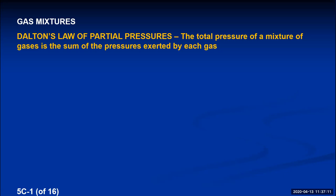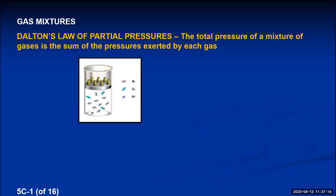Air is an example of a gas mixture. Air is composed of mostly nitrogen, but it has a significant amount of oxygen and some argon as well. Typically atmospheric pressure at sea level on a nice spring day is about 760 torr. If we remove the oxygen and argon, leaving only nitrogen in the container, we would measure the pressure of nitrogen in the mixture — that pressure would be 591 torr.